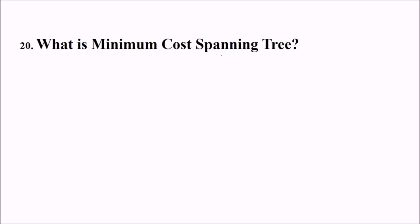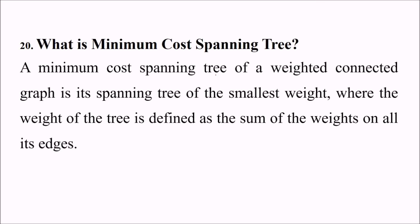Minimum cost spanning tree. What is minimum cost spanning tree? A minimum cost spanning tree of a weighted connected graph is its spanning tree of the smallest weight where the weight of the tree is defined as the sum of the weights on all its edges. You combine all the edges. You find out a tree which is considered to be a minimum cost spanning tree. You consider this weight which is because the tree is weighted and connected. So the tree which is having the smallest weight is minimum cost spanning tree.